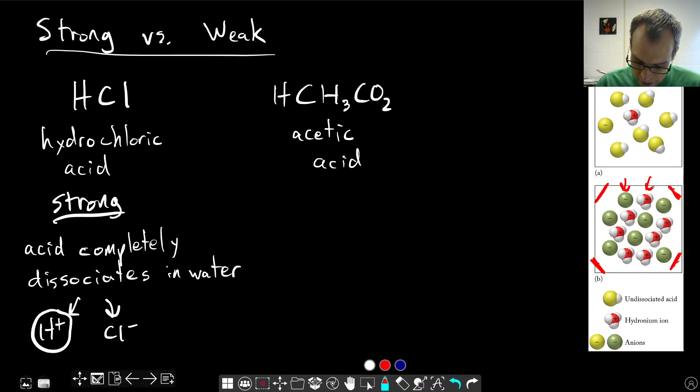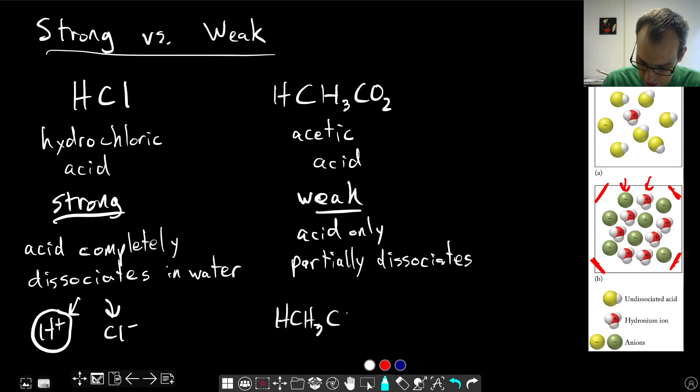In contrast, a weak acid has incomplete dissociation. So a weak acid, the acid only partially dissociates in water. That means most of our acid stays in this form, CH3CO2. And only a little bit of it actually separates the proton off from the acetate ion. So the H+ to form the hydronium ion, and only a little bit of the acetate forms.